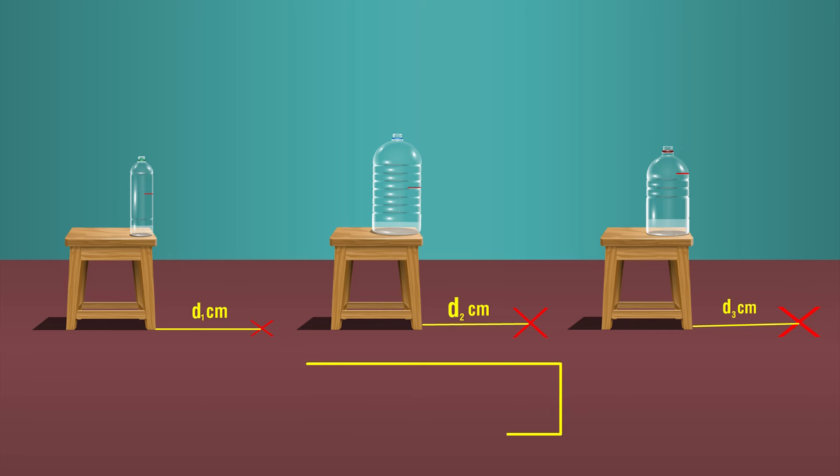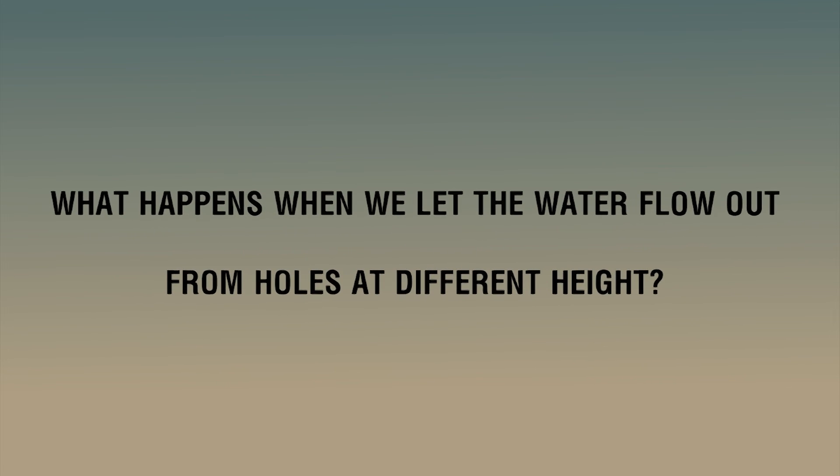We can see that though the volume of water in different bottles was different, still the distance at which the water stream from the holes hit the ground was almost the same for every bottle. Now let us see what happens when we let the water flow out from holes at different heights.